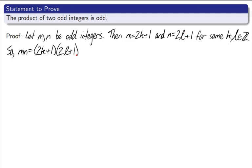So, m times n equals 2k plus 1 times 2l plus 1. I'm just putting in what I just called them earlier. Now let's simplify this. If I multiply this out, the first term is 2k times 2l, which is 4kl. The outer term is 2k. The inner term is 2l. And the last term is 1. So what do we do with that?